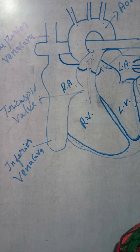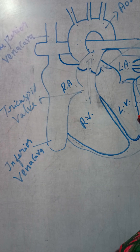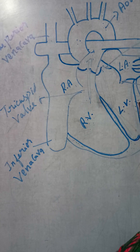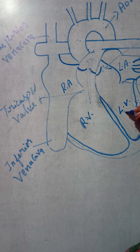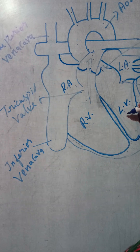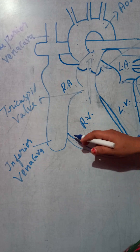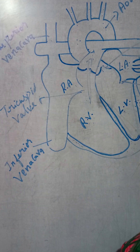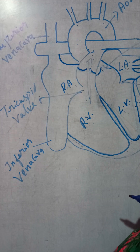Remember one more thing: the wall of the left ventricle is slightly thicker as compared to the right ventricle, because it has to pump oxygenated blood to all parts of our body and distribute it to different organs. That is why its wall is thicker than the right ventricle. I hope you understand — if you have any doubts, you can ask me. Thank you.